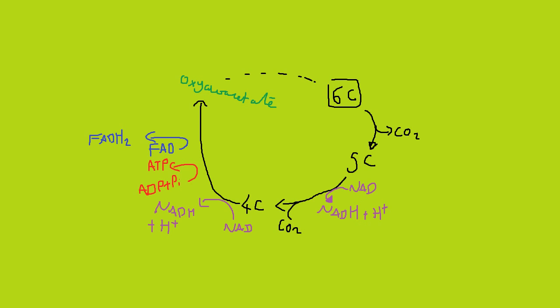FAD reduces to form FADH2, another electron carrier needed for the next stage of respiration. And NAD molecule reduces again to form NADH and H-plus. And this brings us back to oxaloacetate.